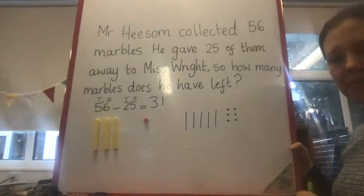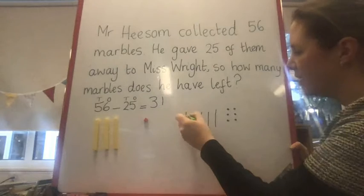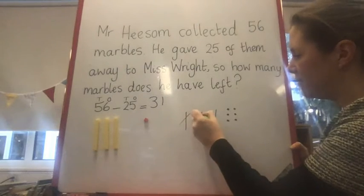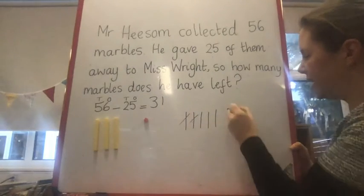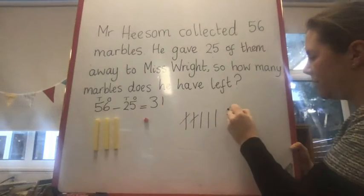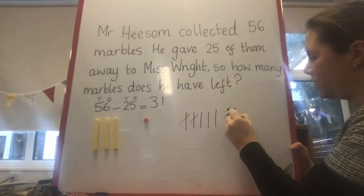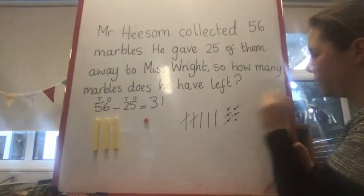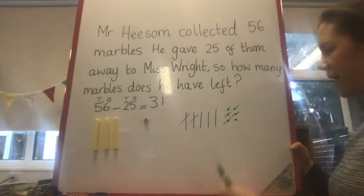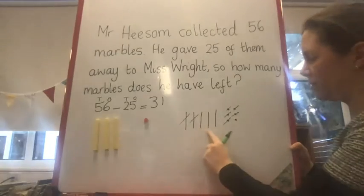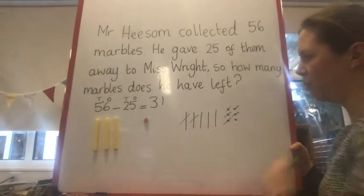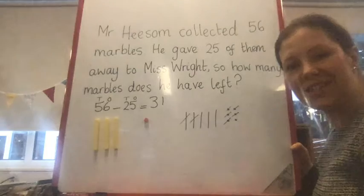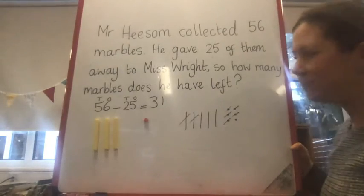I'm just going to cross them out this time. So crossing out: 10, 20, then 21, 22, 23, 24, 25. And that leaves me with the 30 and one more, so it's still 31.